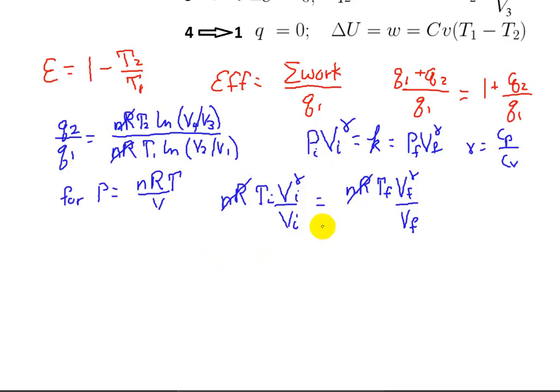That, in turn, will give me something like T sub i times V sub i to the gamma minus 1 is equal to T sub f times V sub f to the gamma minus 1.